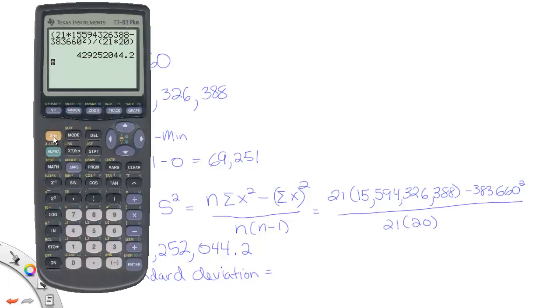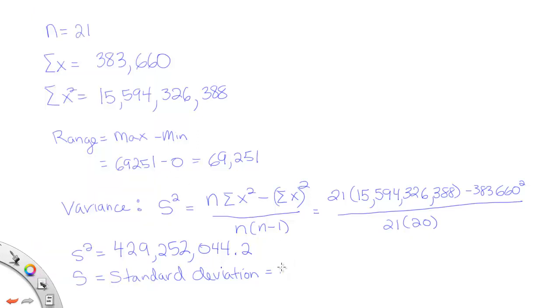So to take the square root of this answer, I can just do second square root key. And then I can take that number, either type in, or in this calculator, I can actually just fill in the previous answer into that position. Press enter, and I get the answer 20,718.40 if I round it. So 20,718.40.